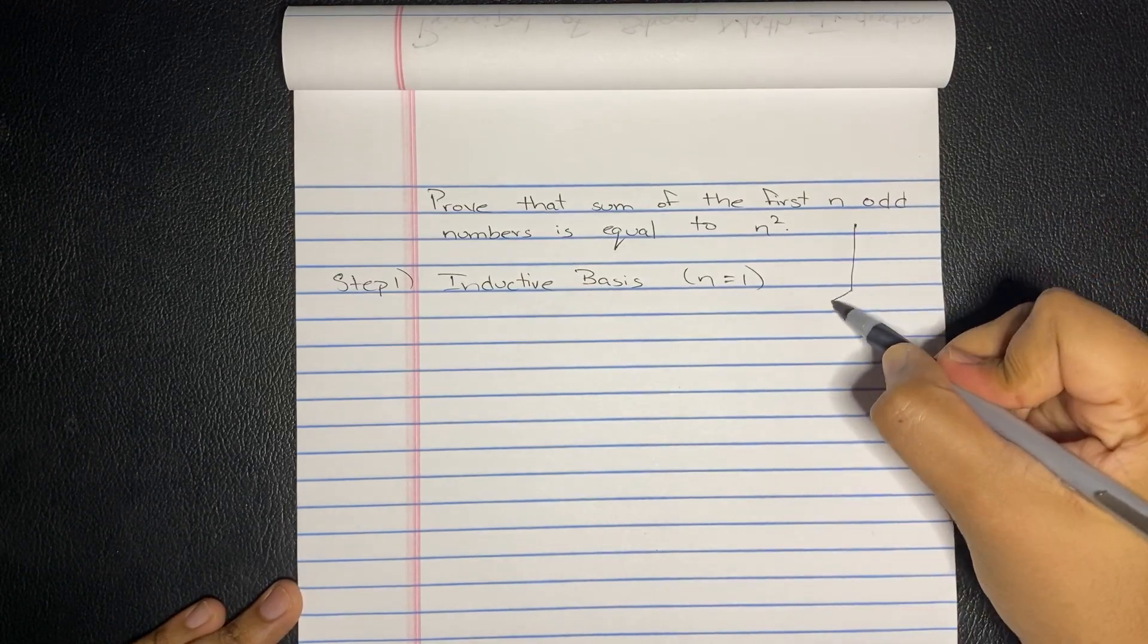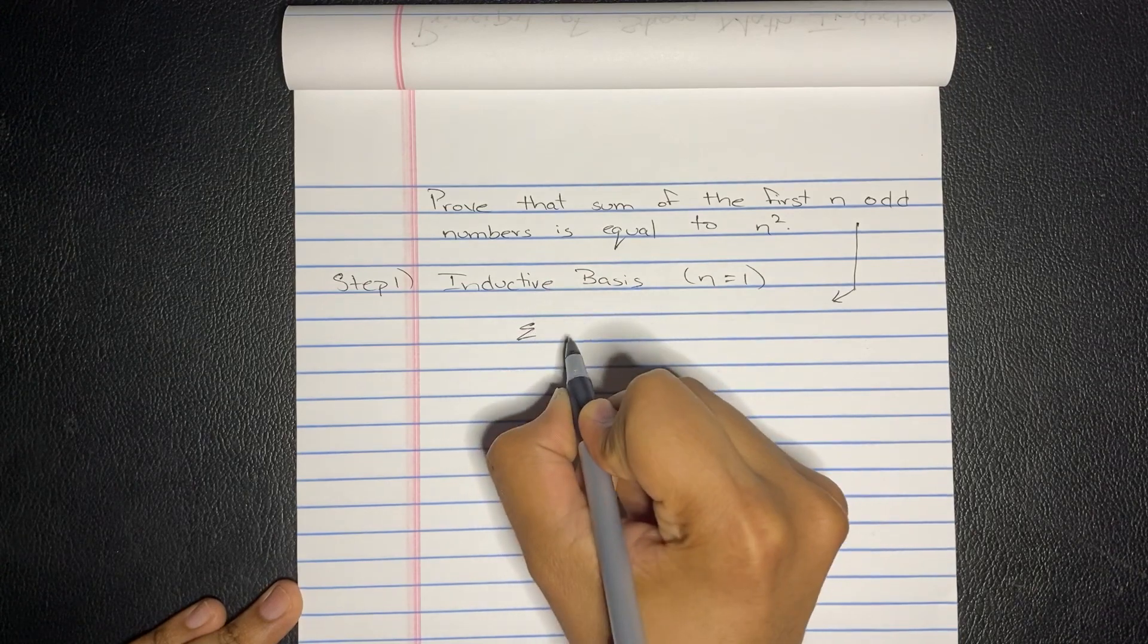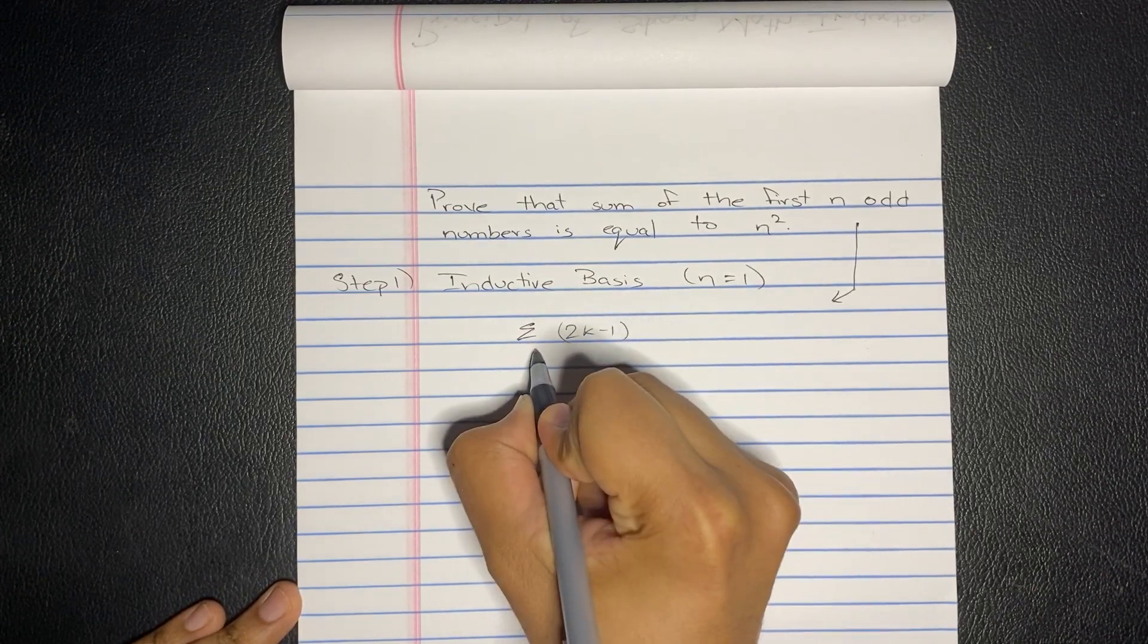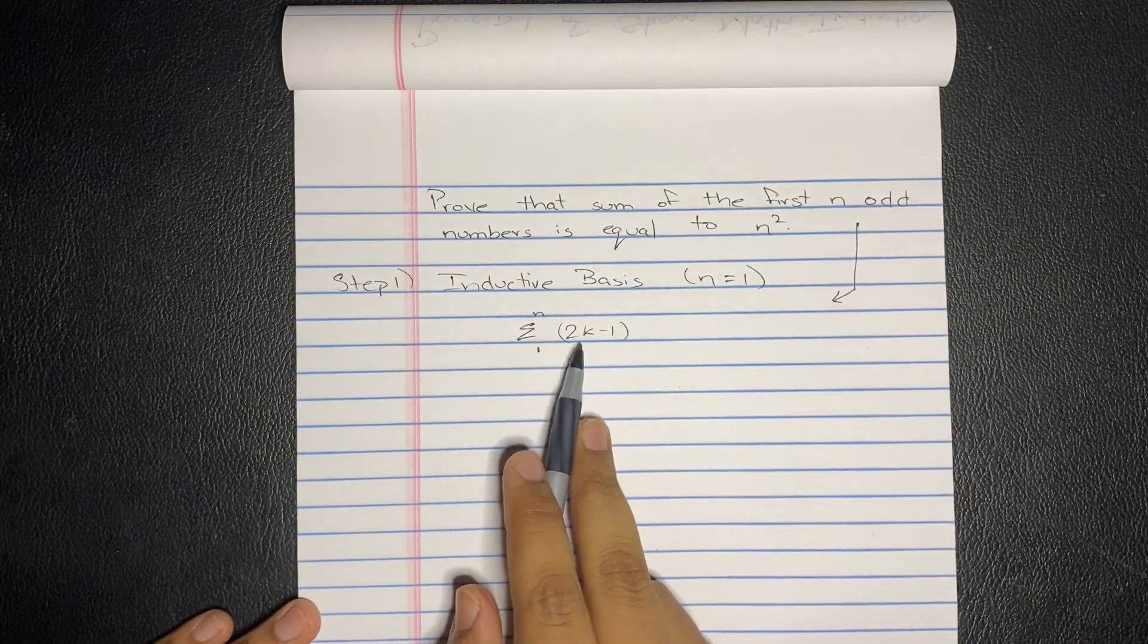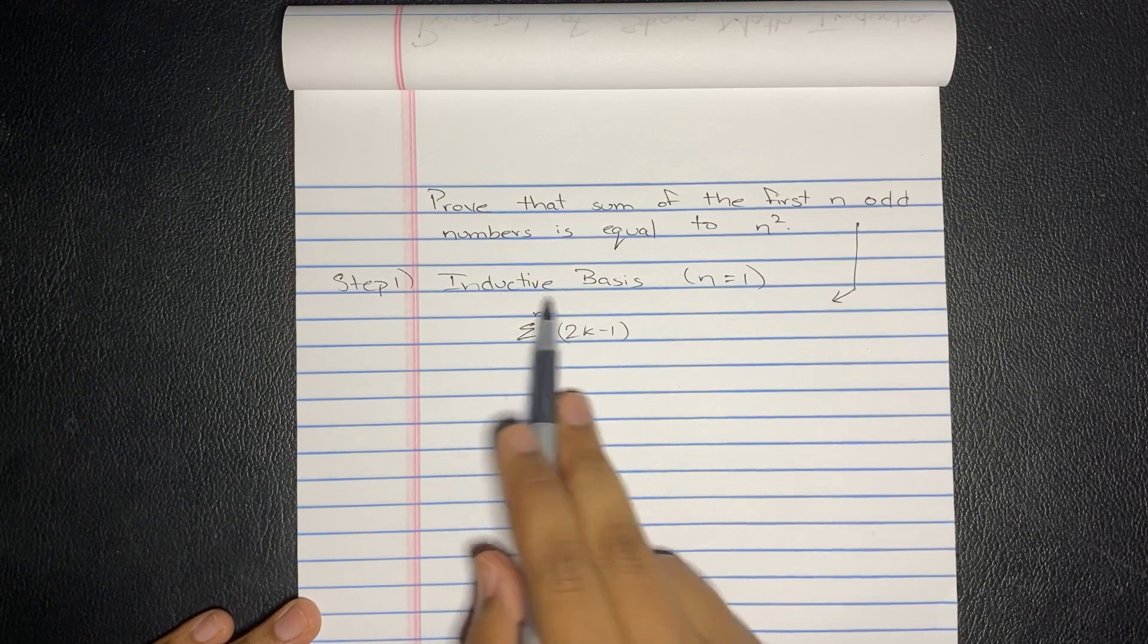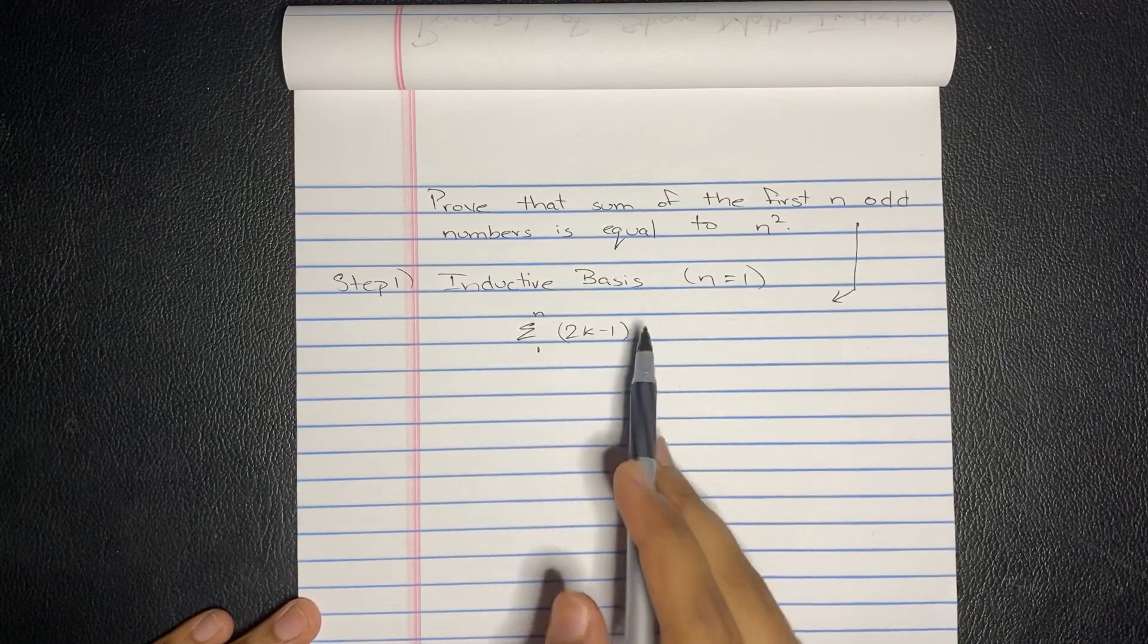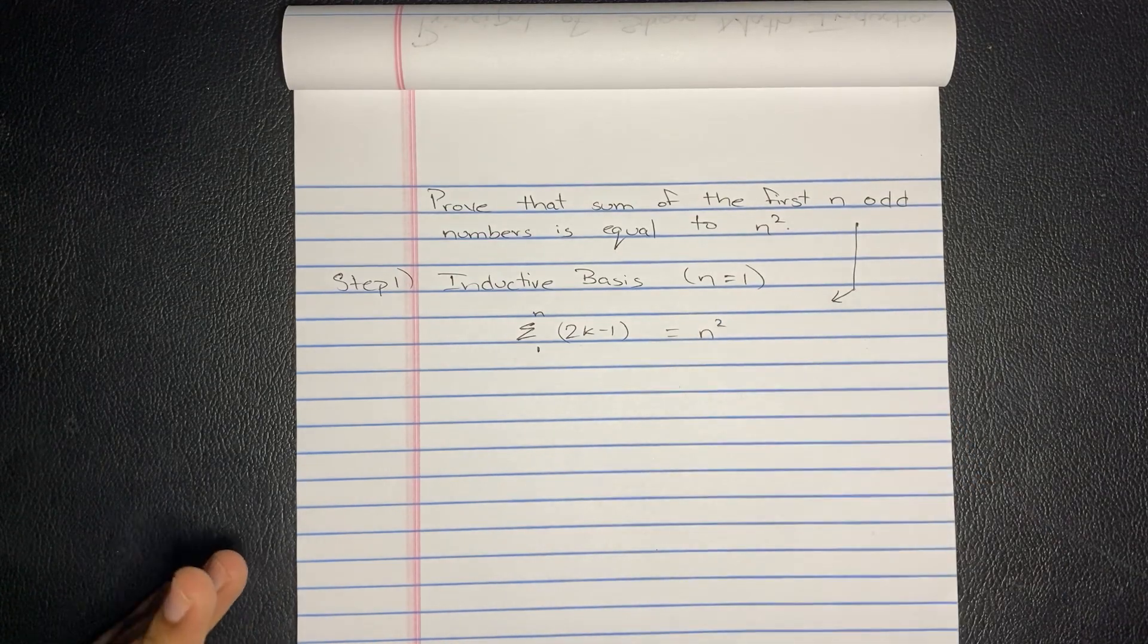So this rewritten is going to be like the sum of the odd numbers. So odd numbers are 2k minus 1 for 1 to n. Because actually, if you do replace it, you're going to realize this gives you 1. If you replace k by 1, 2, 3 of this summation series, it's going to be 1, 3, 5, so on and so forth. And this equals n squared. We have to prove this.